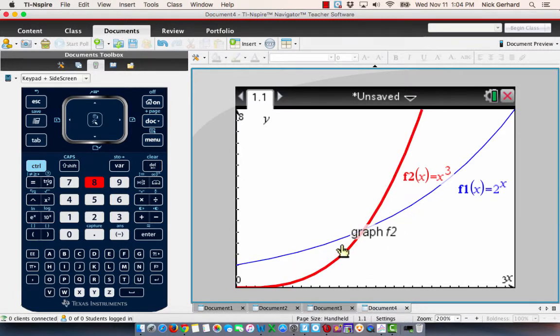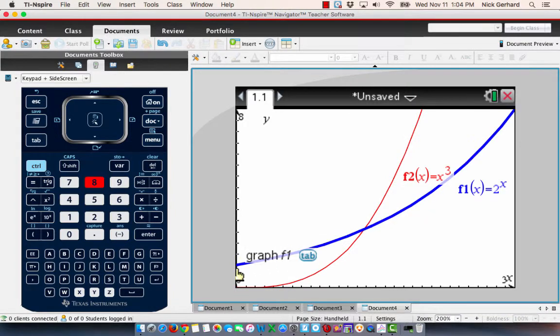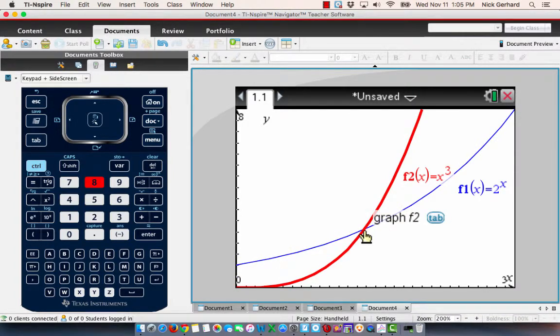And you can see right here that 2 to the x is this blue graph. Now, where is it greater than the red graph? Well, when it's above the red graph. And so, between 0 and whatever this point is, is when 2 to the x is greater than x cubed.